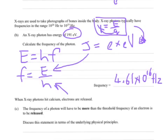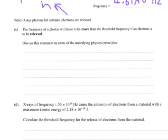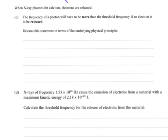When X-ray photons hit calcium, electrons are released. C. The frequency of a photon will have to be more than the threshold frequency if an electron is to be released. So, let's discuss this statement in terms of underlying physics principles. Okay. So, really, this is getting to the heart of the photoelectric effect,